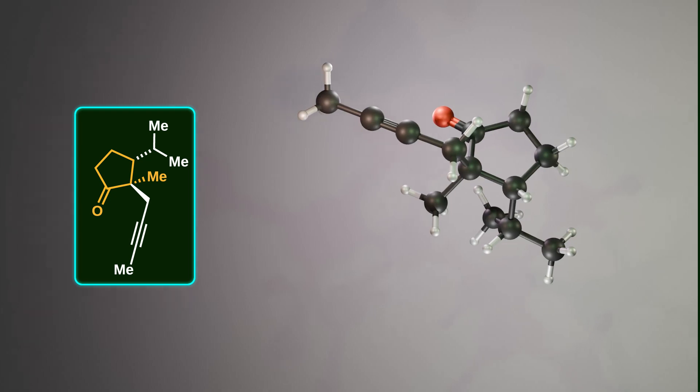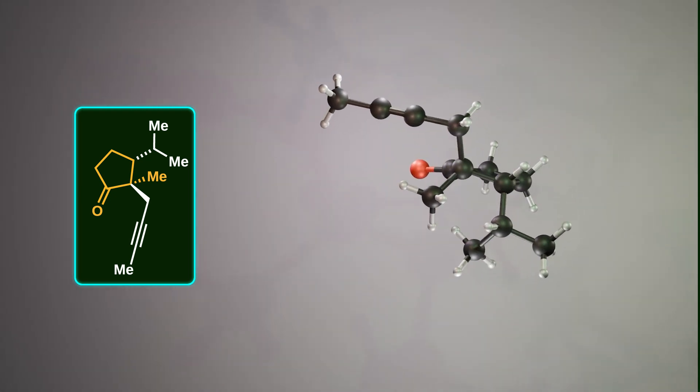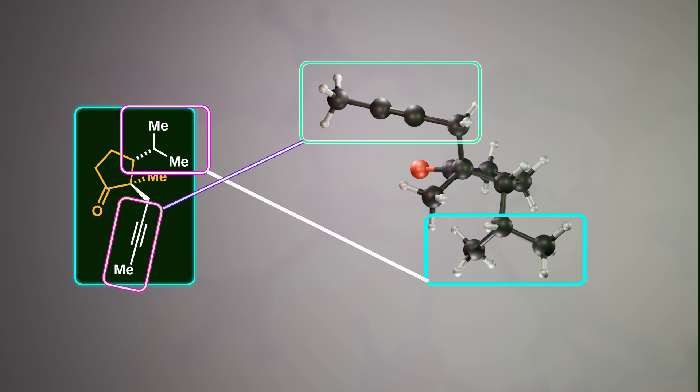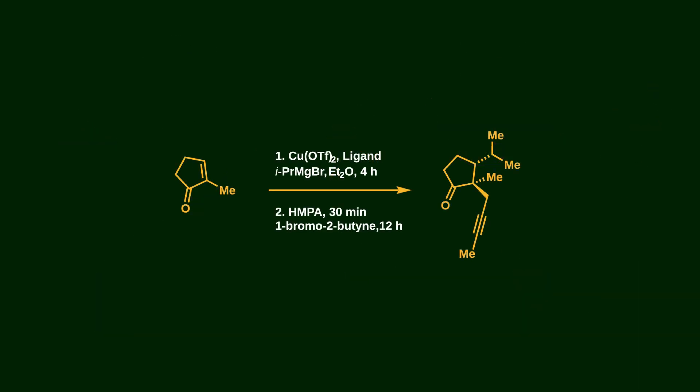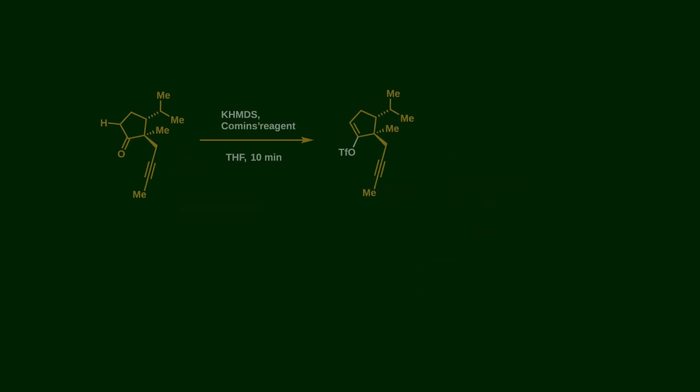The enolate then attacks 1-bromo-2-butyne via an SN2-type reaction. Notice that the reaction is also stereospecific because the bulky isopropyl group blocks the lower face, so the butyne is installed on the opposite face of the isopropyl group. I separated this reaction into two steps just to make it easier to understand, but it's actually a one-pot procedure, and the product is formed with 81% enantiomeric excess.